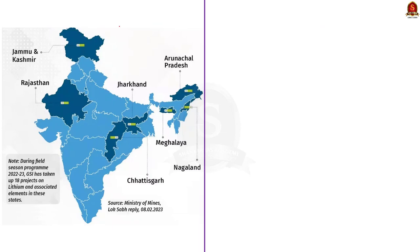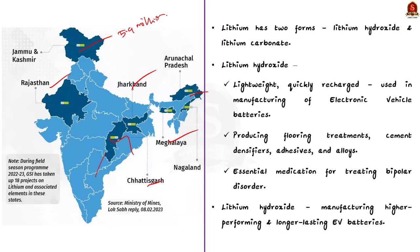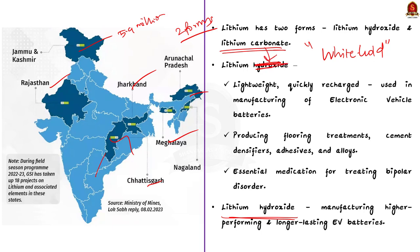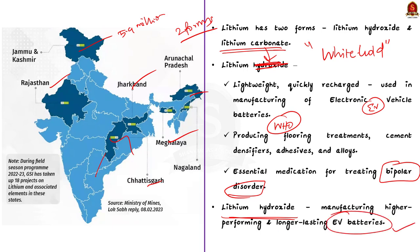In India, lithium reserves are concentrated in states like Chhattisgarh, Nagaland, Meghalaya, Arunachal Pradesh, Karnataka, Rajasthan, Jharkhand, and Andhra Pradesh. Recently, there was a discovery of 5.9 million metric tons of lithium in the Salal-Haimana area of Jammu & Kashmir — the first major lithium reserve found in India. Lithium is often referred to as 'white gold' due to its market value. It is found in two forms: lithium hydroxide and lithium carbonate, both used in batteries and electric vehicles. Lithium carbonate is also listed by the WHO as an essential medication for treating bipolar disorder.